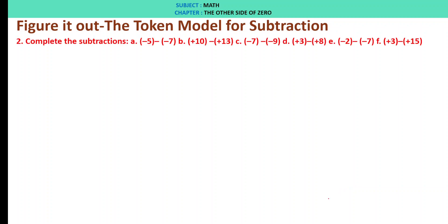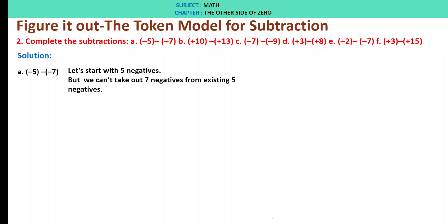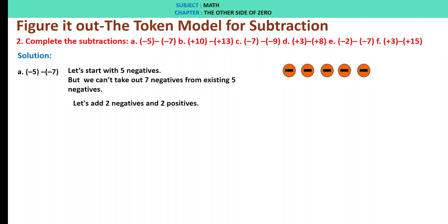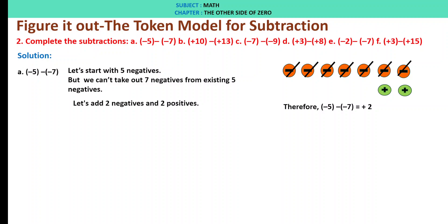Figure it out: the token model for subtraction, Question 2. Complete the subtractions. A: minus 5 minus of minus 7. Let us start with 5 negatives. We can't take out 7 negatives from existing 5 negatives. So let's add 2 negatives and 2 positives. Striking out 7 negatives, we are left with 2 positives. Therefore, minus 5 minus of minus 7 is plus 2.